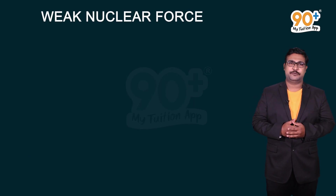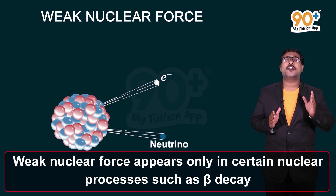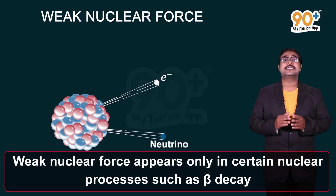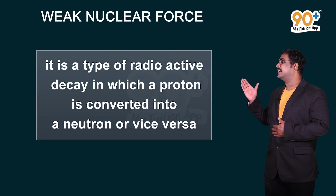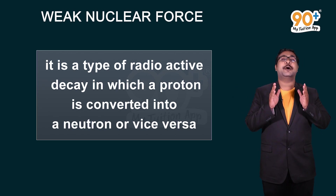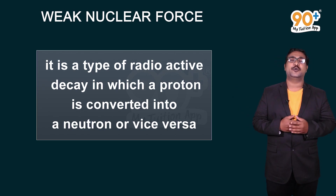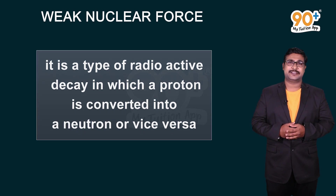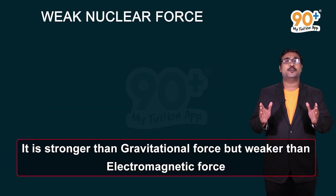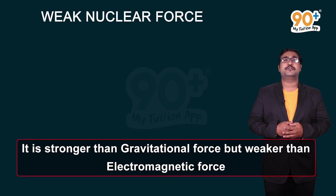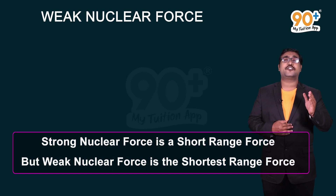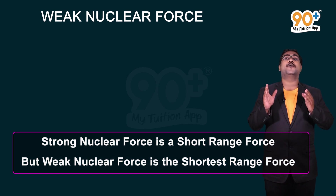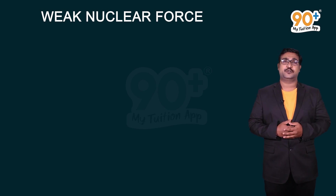Weak nuclear force occurs only in certain nuclear processes like beta decay. Beta decay is a type of radioactive decay in which a proton is converted into a neutron and vice versa. Weak nuclear force is stronger than gravitational force but weaker than electromagnetic force. Strong nuclear force is a short-range force, but weak nuclear force is the shortest-range force.